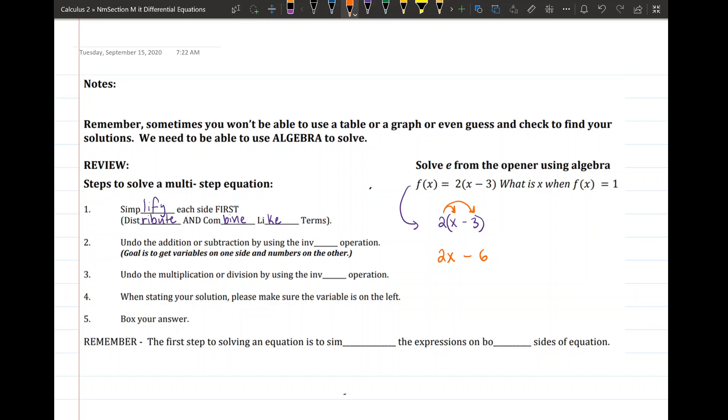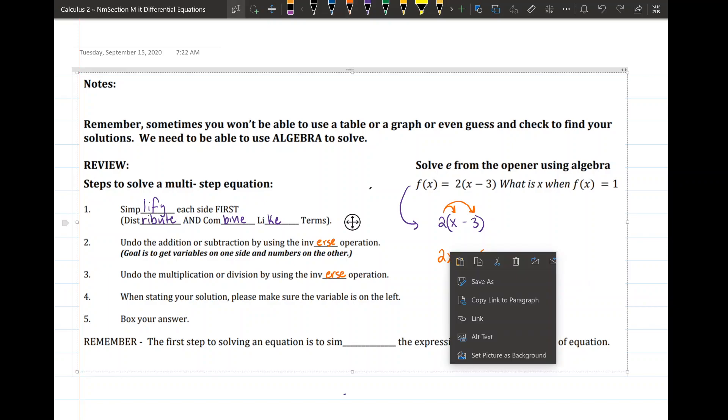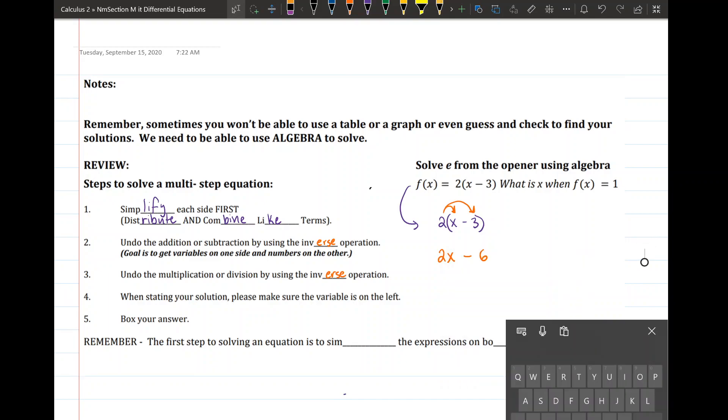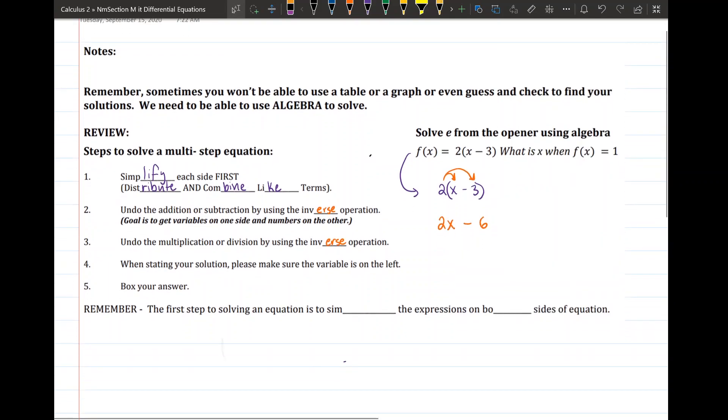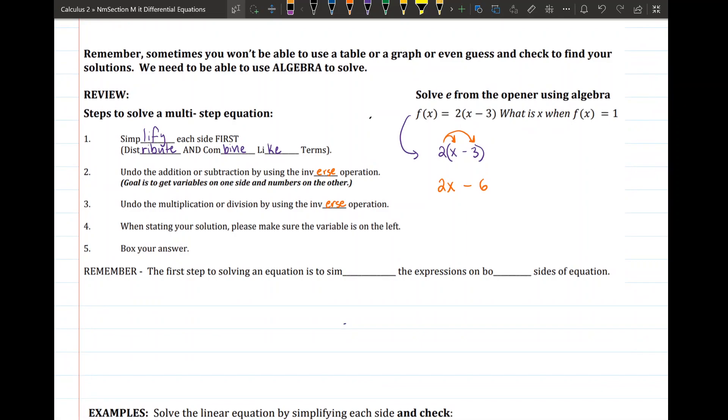Now then our steps are going to basically be the same. We're going to undo addition or subtraction by using the inverse operation. We're going to undo multiplication and division by using again the inverse operation. So if it's addition we'll use subtraction, if it's multiplication we'll use division and vice versa. And of course we're going to try to keep our variable on the left and box our answer.